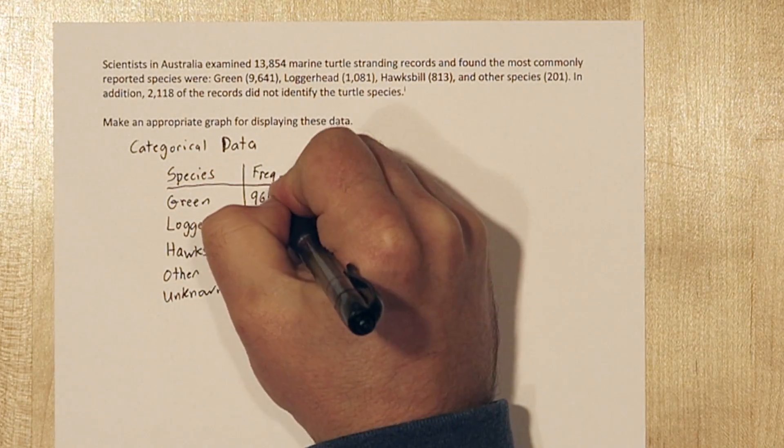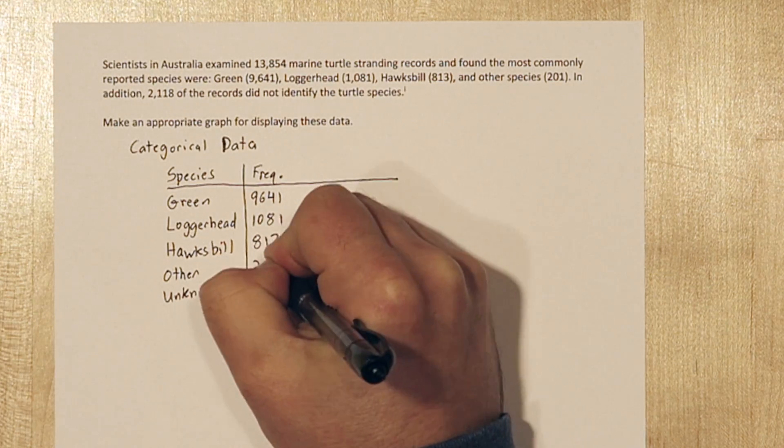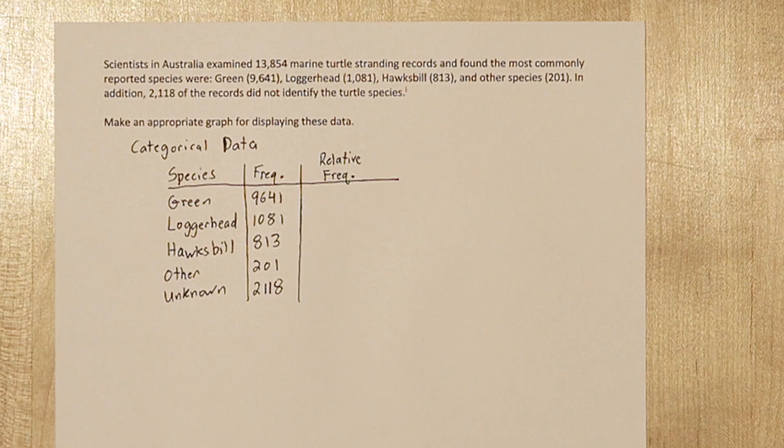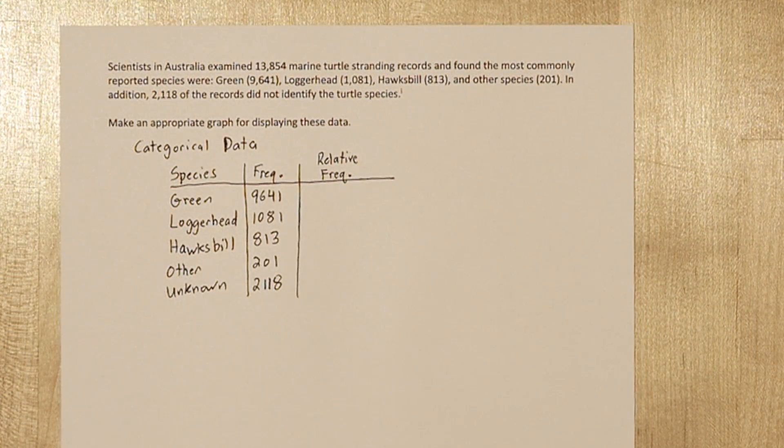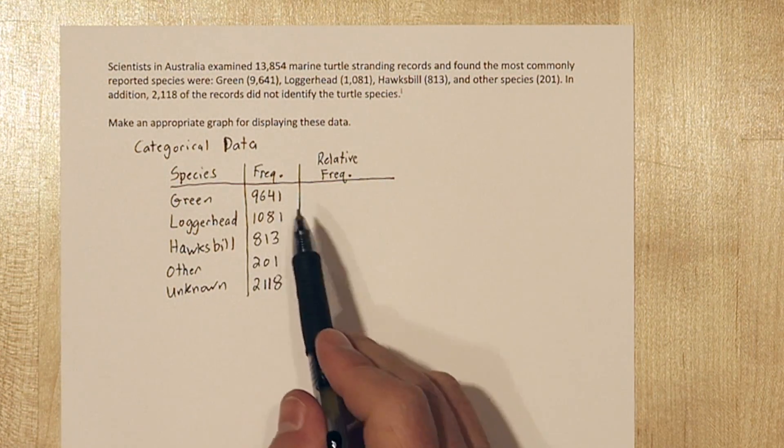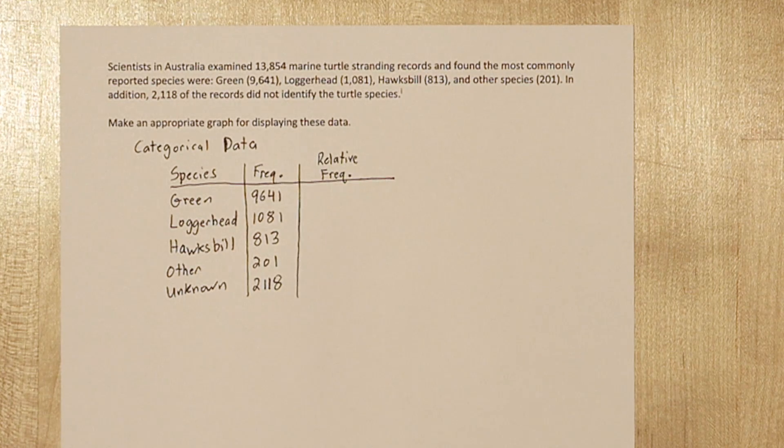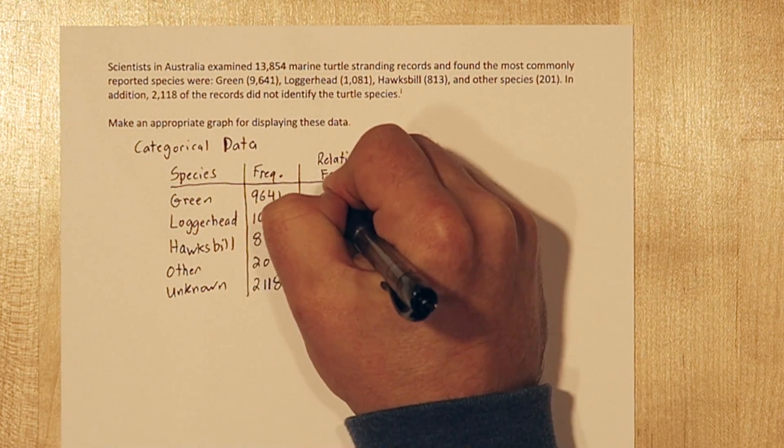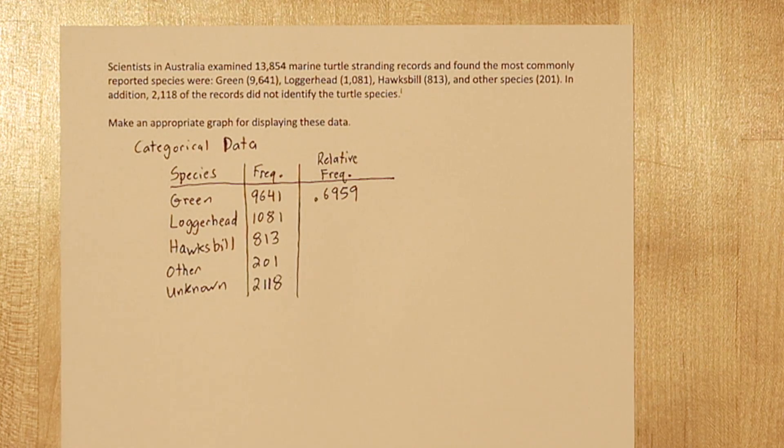From the stem of the problem we have the frequencies of each of the species, but it's often more useful to display the relative frequencies, which is just the percents. To find the relative frequency for the green sea turtle, we divide 9,641 by the total number of turtles, 13,854. That gives us an approximate relative frequency of .6959.